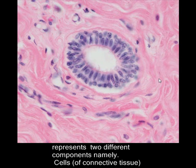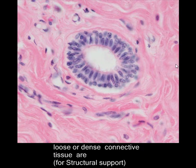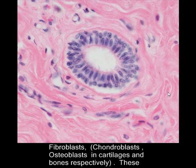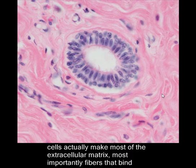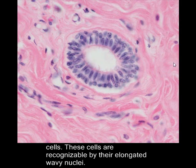The term connective tissue represents two different components: namely cells and the extracellular matrix. These are the nuclei of cells within the connective tissue. The most important cells of loose or dense connective tissue are fibroblasts. These cells make most of the extracellular matrix, most importantly the fibers that bind these cells together. These cells are recognizable by their elongated nuclei, so we can confidently say that these nuclei belong to fibroblasts. These fibroblasts are mobile cells that make the extracellular matrix, most importantly fibers.